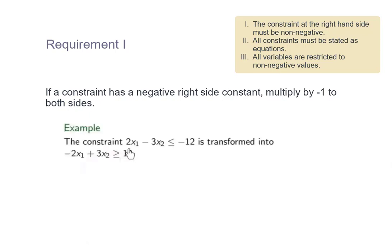For example, if we come across a constraint where the right-hand side coefficient is negative 12, then we can multiply the whole inequality by negative 1 to make it negative 2x1 plus 3x2 greater than or equal to 12.